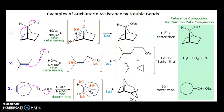So friends, you have now understood the ankhymeric assistance by the double bond. In this video we have seen what is neighboring group participation, its mechanism along with examples. This was a very important point in organic chemistry. In any kind of examination, such type of questions are asked — multiple choice questions or in descriptive type questions — everywhere in any examination there is a 100% question on ankhymeric assistance. NGP and ankhymeric assistance help to remove the leaving group, so the reactions in which NGP is there, the reactions are faster.